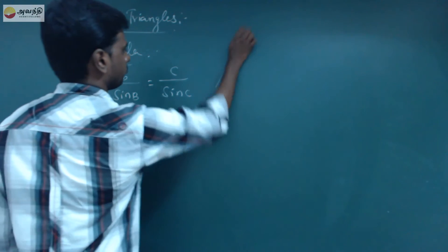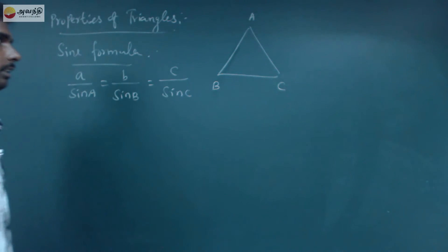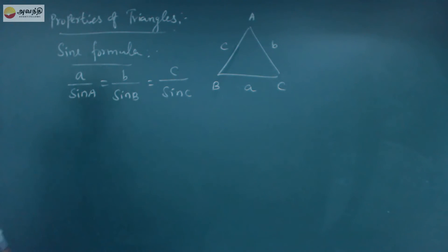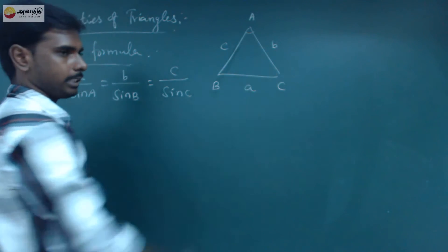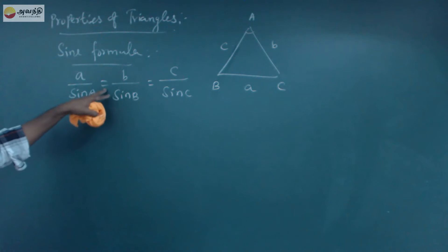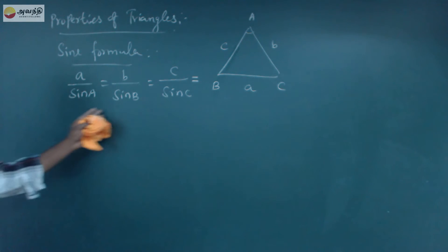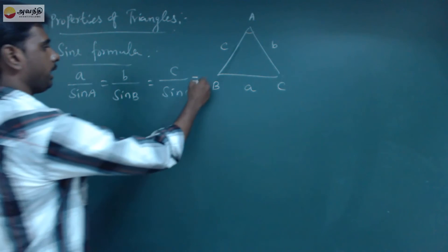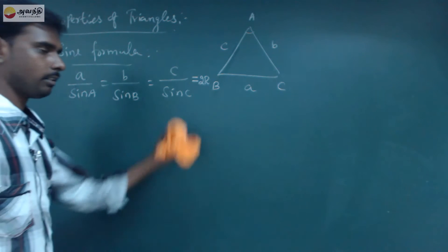This is a triangle with vertices A, B, and C, having 3 angles and sides a, b, and c. A by sinA is equal to b by sinB is equal to c by sinC. All of these are consecutively equal — the same constant. We can express this constant as 2R.